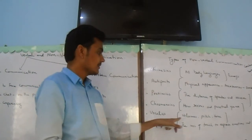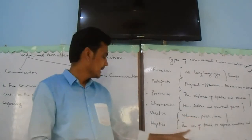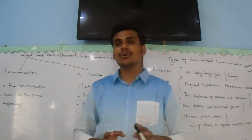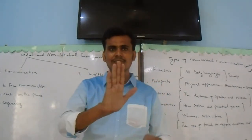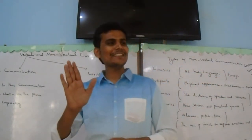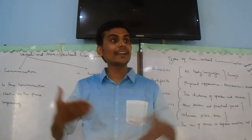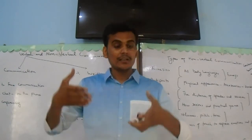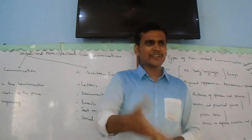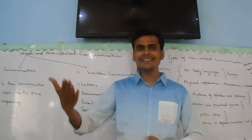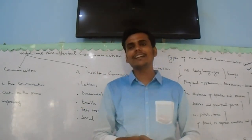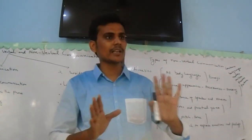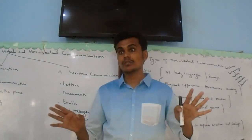Then we have vocalics — volume and speech tone. Then we have haptics, which is very interesting. Haptics means the use of touch to express emotions and feelings. Friends giving high-fives, hugging, or shaking hands are all examples. Some people shake hands very tightly, some very loosely, and some greet without touching at all — each conveys a different message. This is haptics. Girls tend to use a lot of touch during communication.